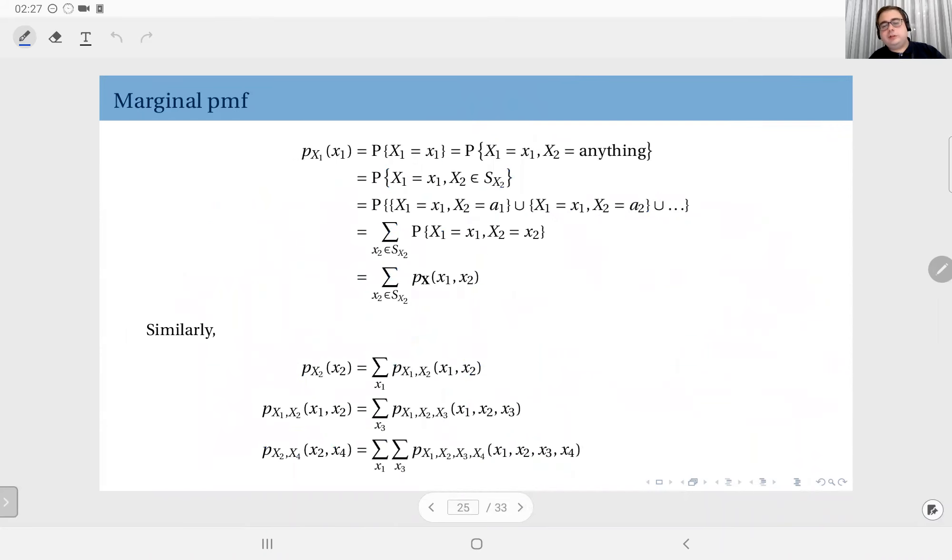The question is, when I have the joint PMF, can I derive what we call the marginal PMF of, let's say, x1, which is essentially just the PMF of x1? So when I have the joint distribution, can I derive how the random variable x1 behaves in general?